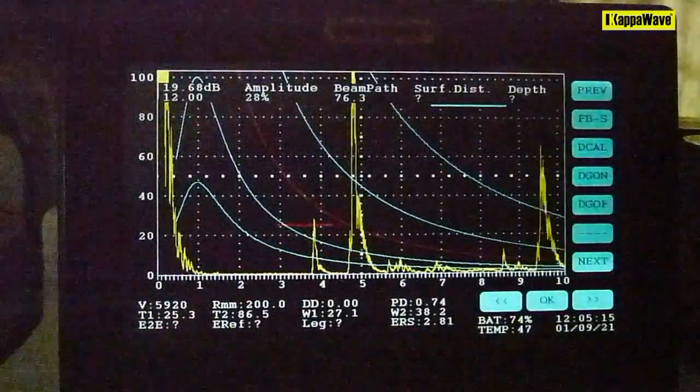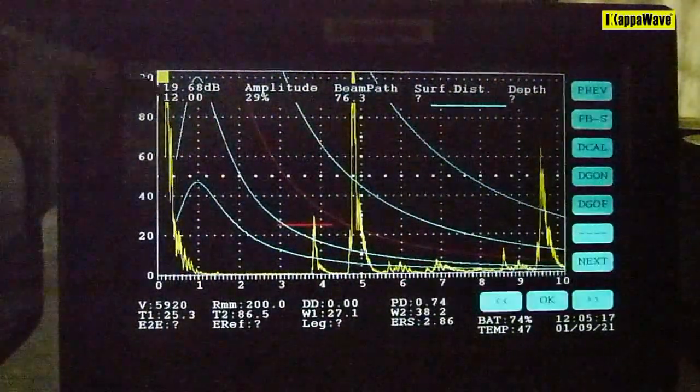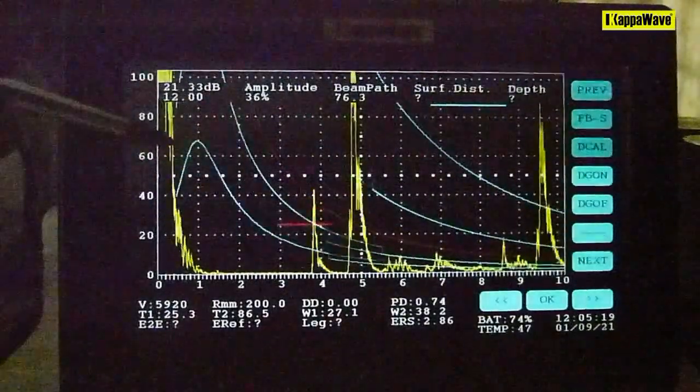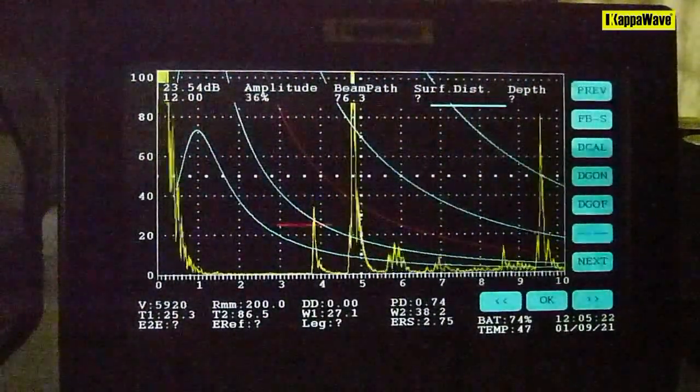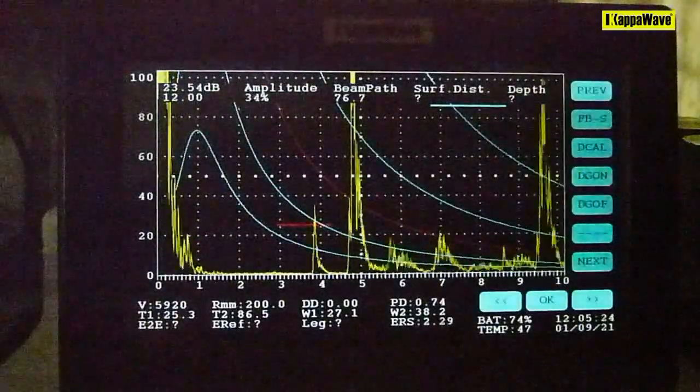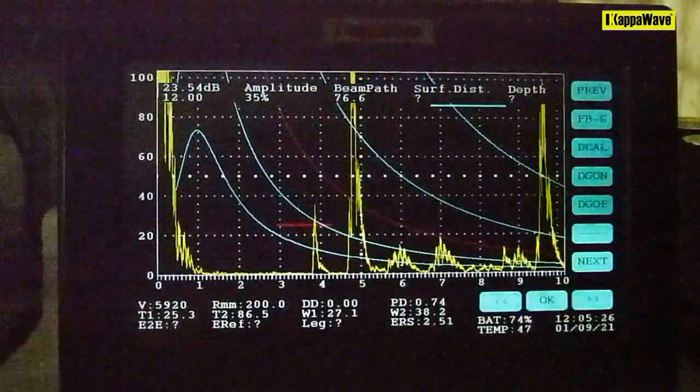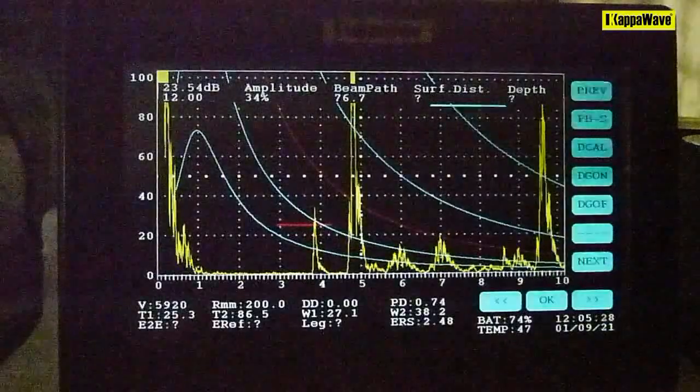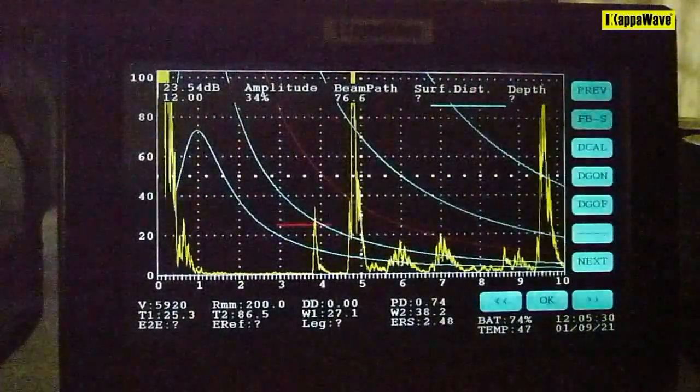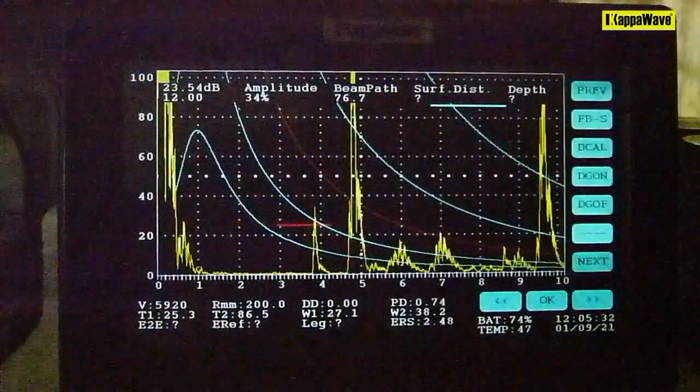Okay, this is dynamic. You can also increase or decrease the gain values and the curves will also move accordingly. I'm on to the third block that has a flat bottom hole of about 2.3 millimeter, so I'm getting as 2.4 millimeter there.